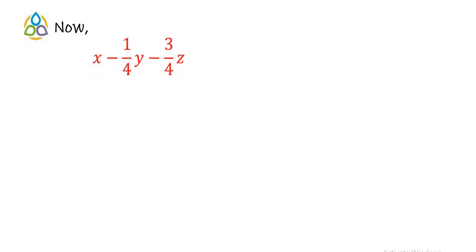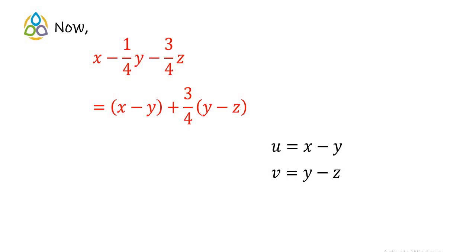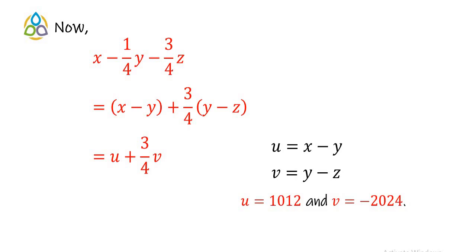Now we evaluate the final expression x − (1/4)y − (3/4)z. We rewrite it as (x − y) + (3/4)(y − z) = u + (3/4)v. Substituting u = 1012 and v = −2024: 1012 + (3/4)(−2024) = 1012 − 1518 = −506. The answer is −506.